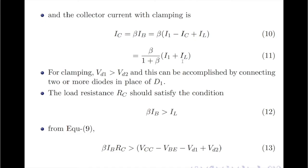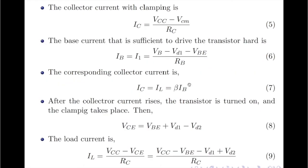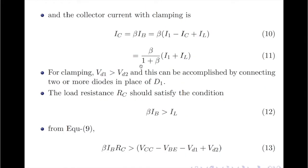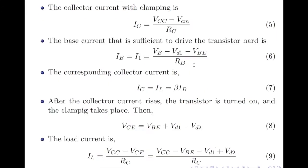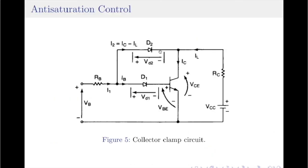Now, an important note: when I compare the RHS of equation 11 — the collector current after clamping — with the RHS of equation 7, the collector current before clamping, I find that the collector current after clamping has reduced compared to before clamping. This is very important because the collector current is now clamped so that the transistor does not enter hard saturation. That is the overall idea behind using diode D2: by connecting D2 across the base and collector, we ensure the transistor works only in quasi-saturation, also called soft saturation.